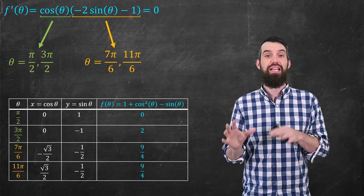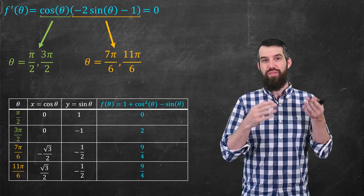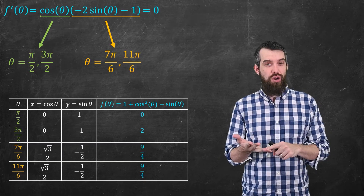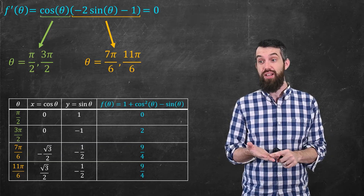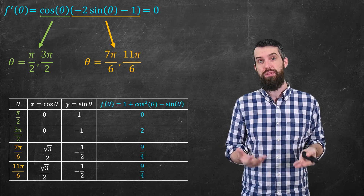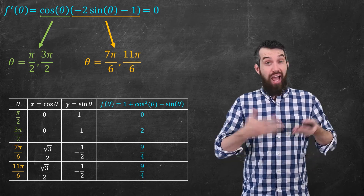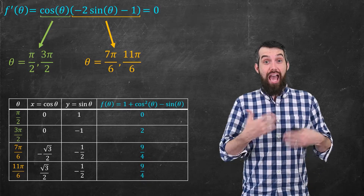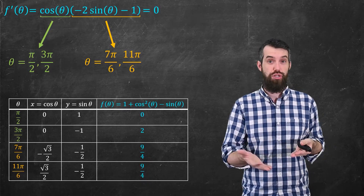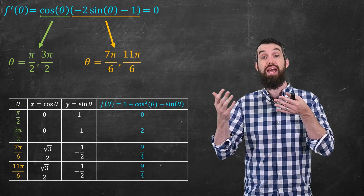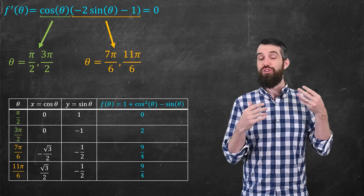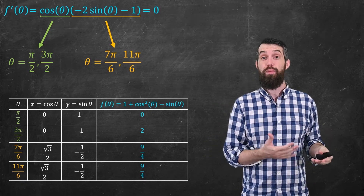I'll make a table. For each of the four θ values, I compute x = cos θ and y = sin θ, then plug into f(θ). The resulting function values are 0, 2, 9/4, and 9/4. So those are all the interesting points along the boundary.